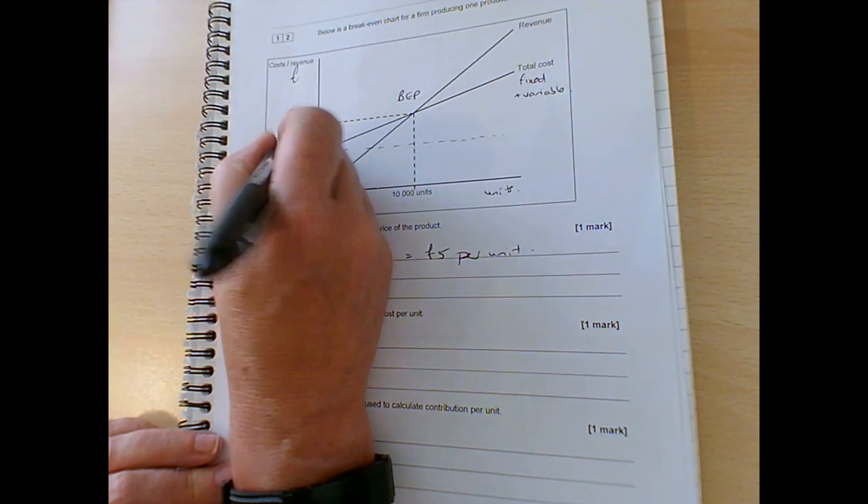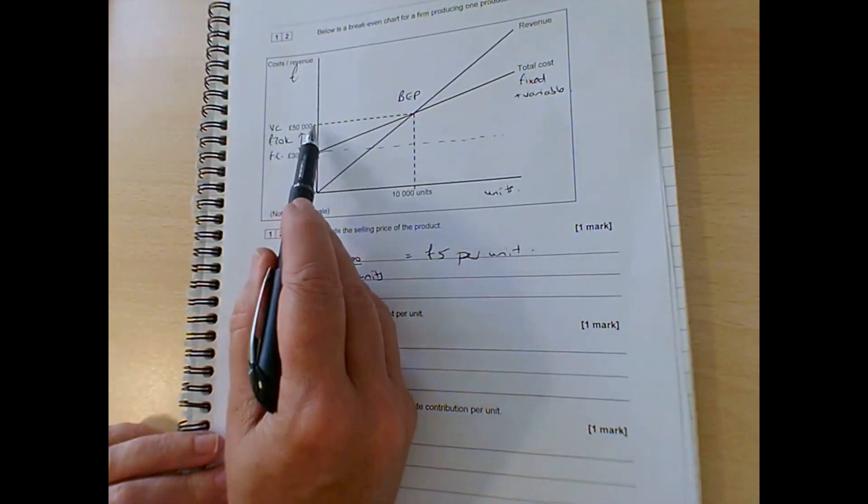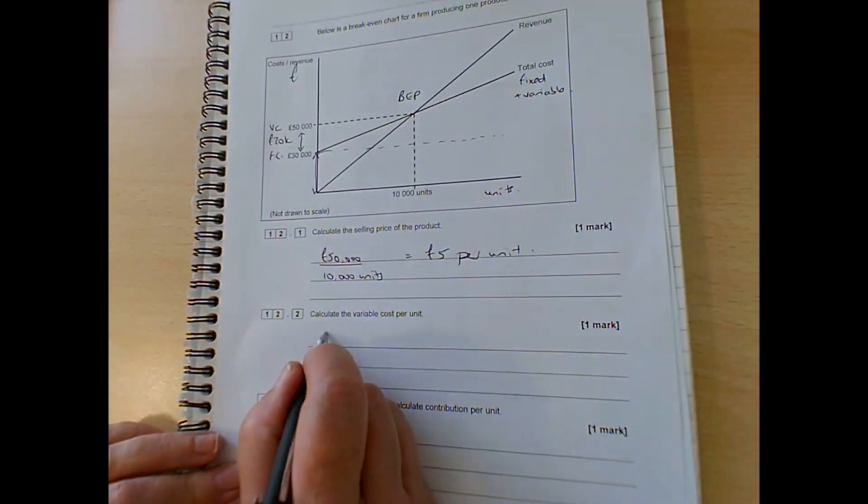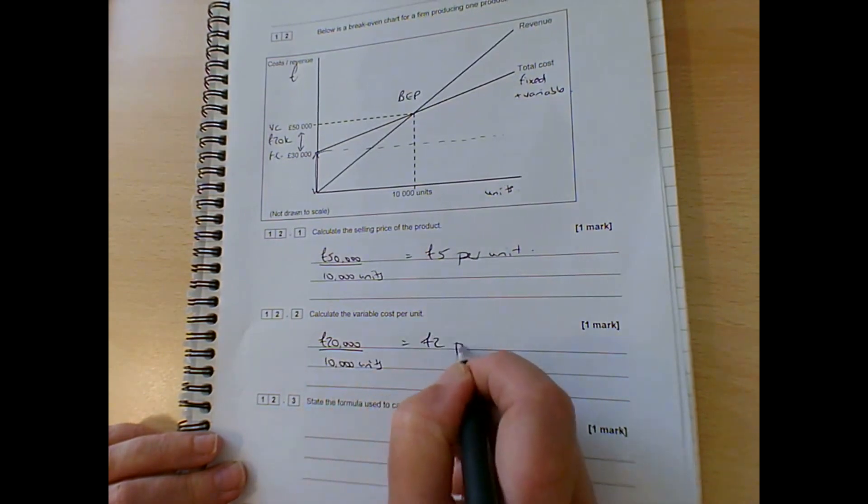So if that is the fixed cost, the difference of 20k is the variable costs. So at 10,000 units, the variable costs are £20,000. So if we divide £20,000 by 10,000 units, that gives us £2 per unit.